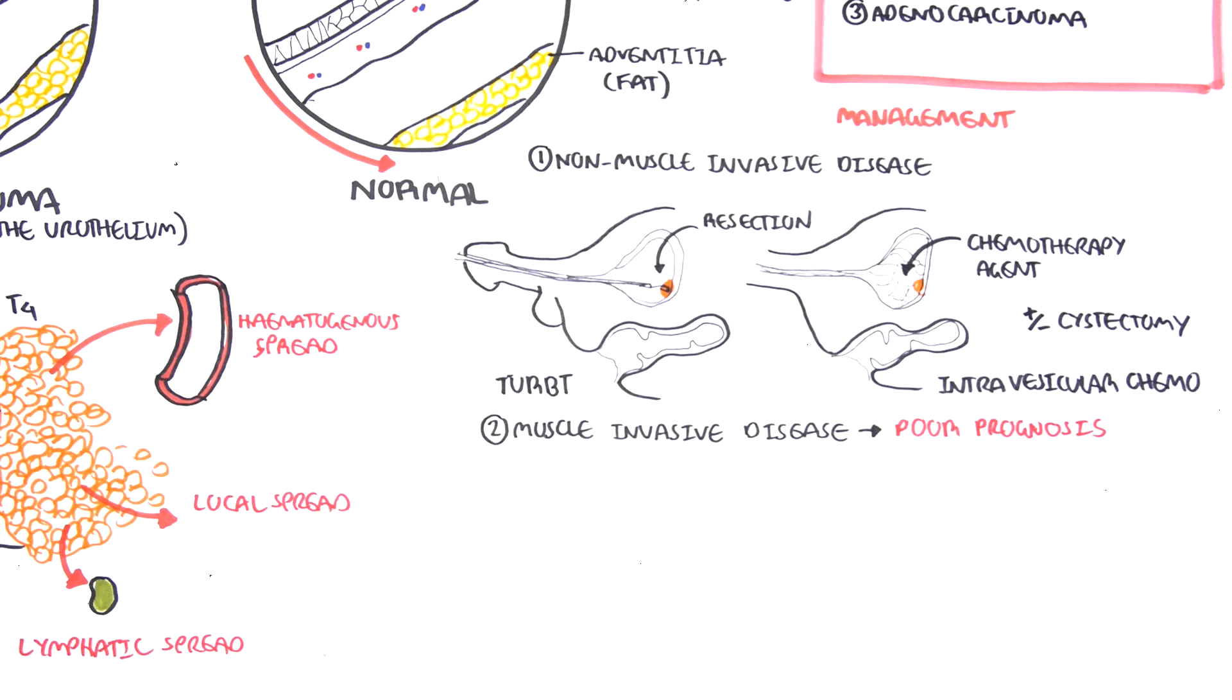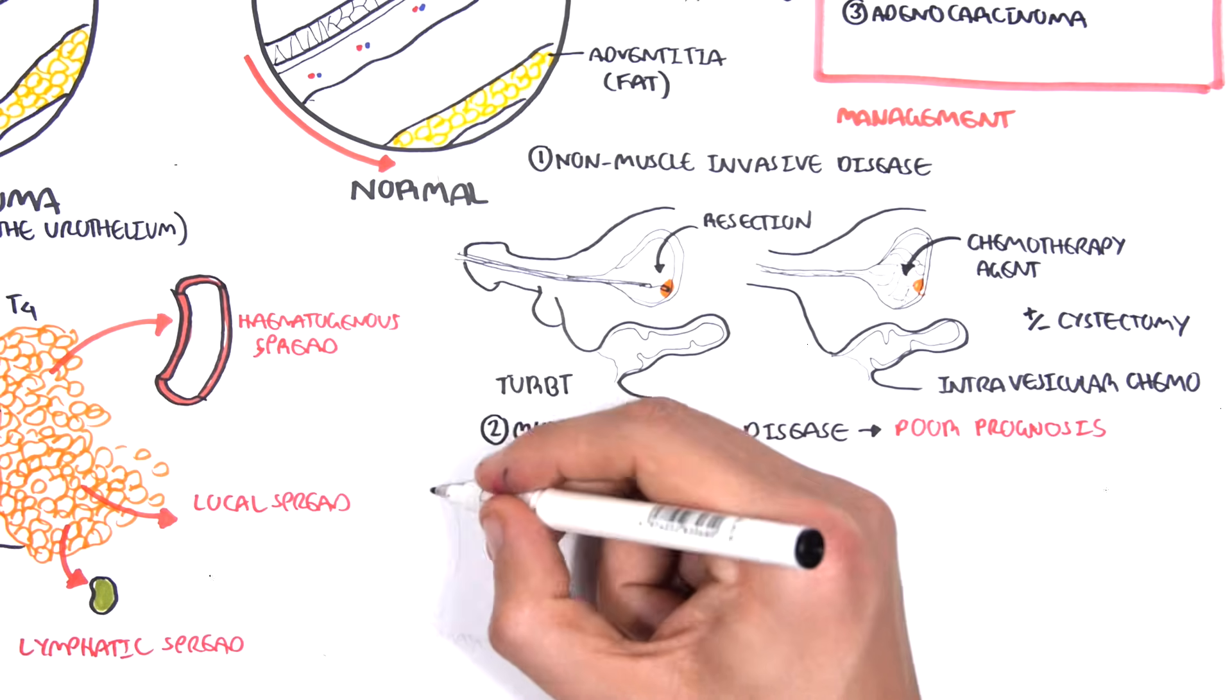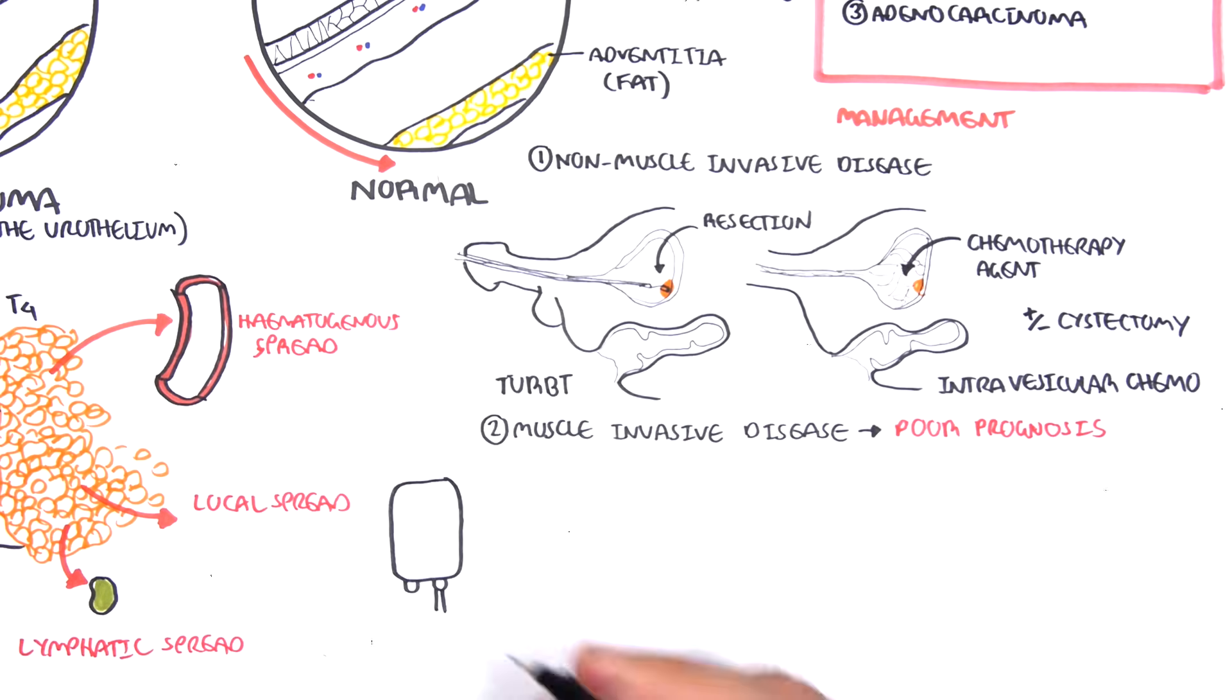This, of course, means that the ureter, which brings urine down to the bladder, has to be reconnected somewhere so that urine can go out somewhere else. Now, let's focus on muscle invasive bladder carcinoma, which, as mentioned, has a poorer prognosis.